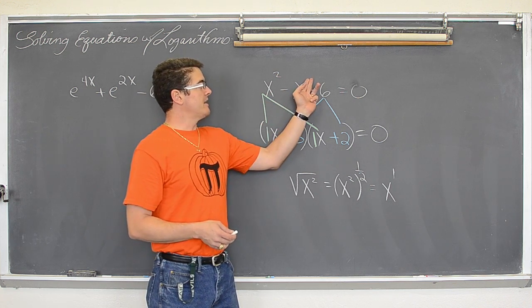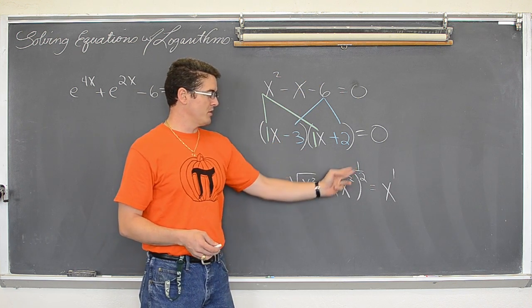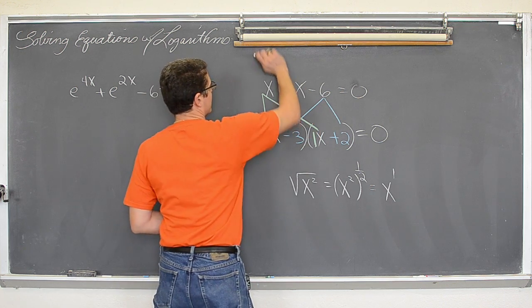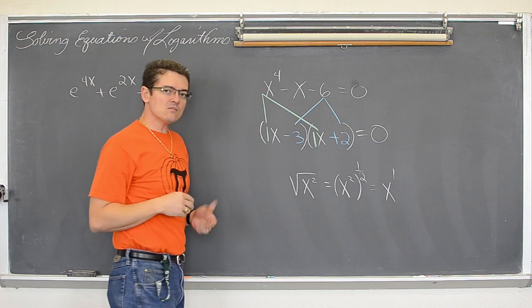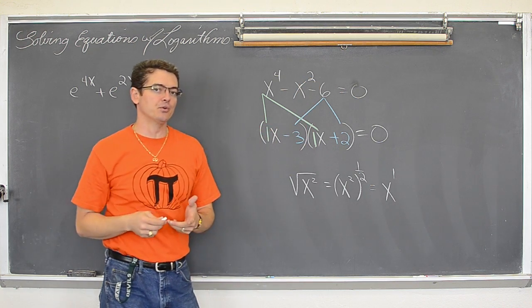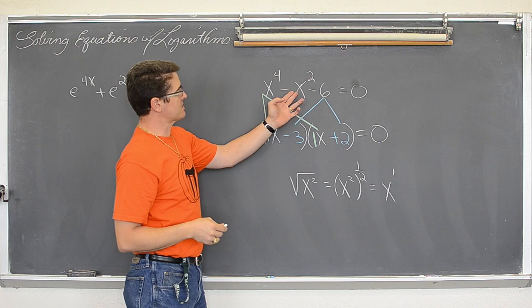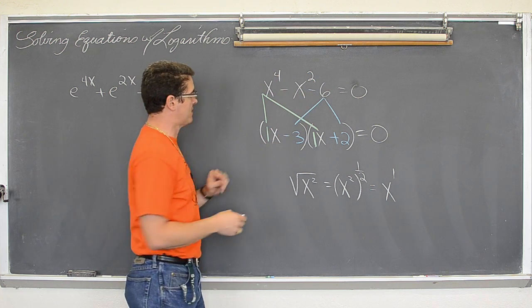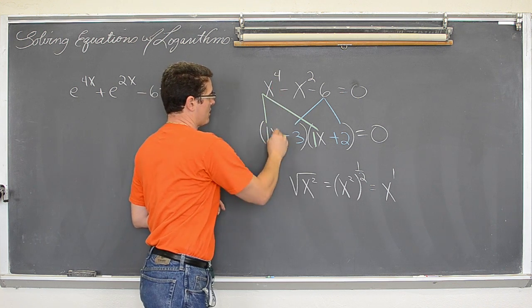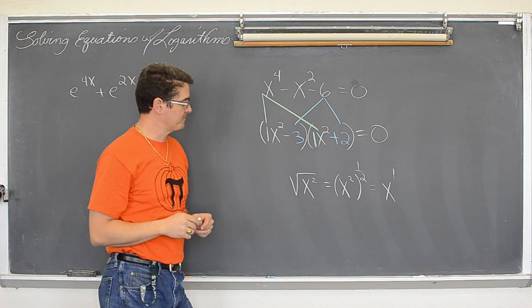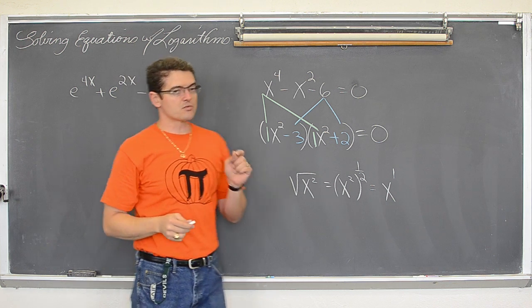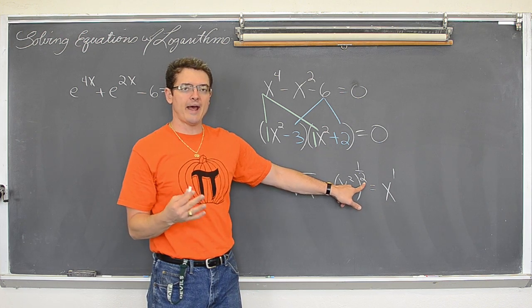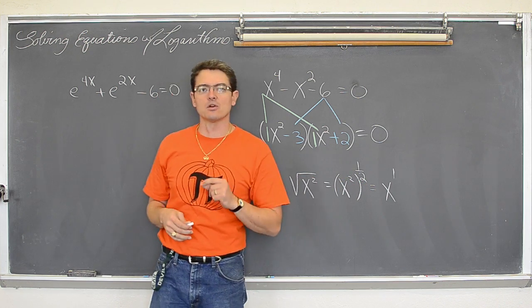So when you have a trinomial, it is going to be factorable as long as, well as long as it is factorable in the first place. As far as the exponents are concerned, you want those exponents to count down in halves. Whatever this first exponent is, then half of that because that is what you do when you square root in exponents, and then just a constant at the end. So as far as exponents are concerned, you are dividing them by two.